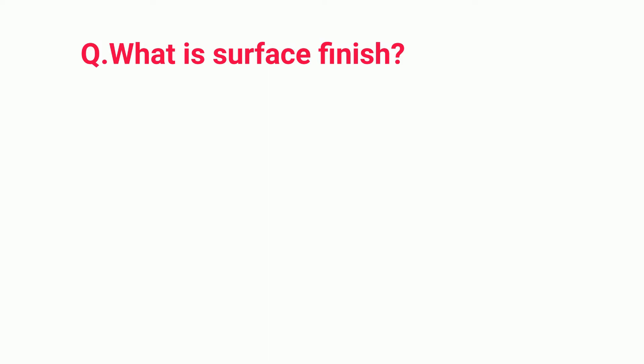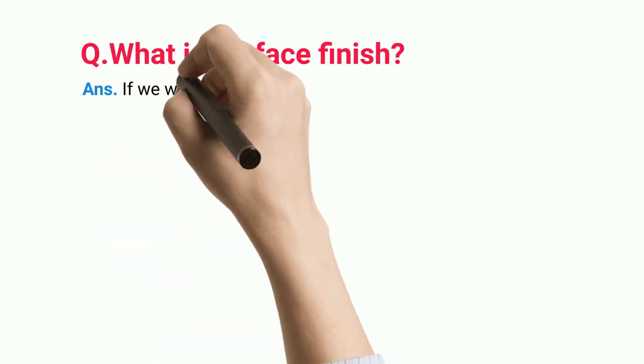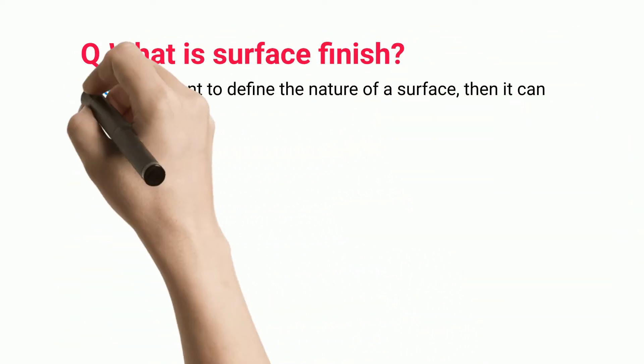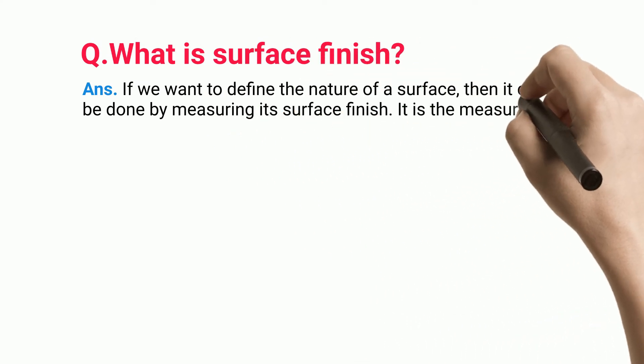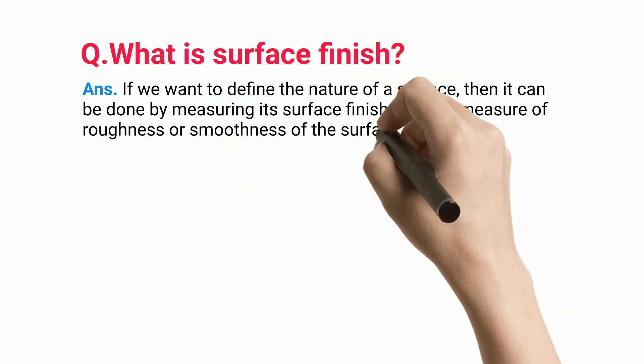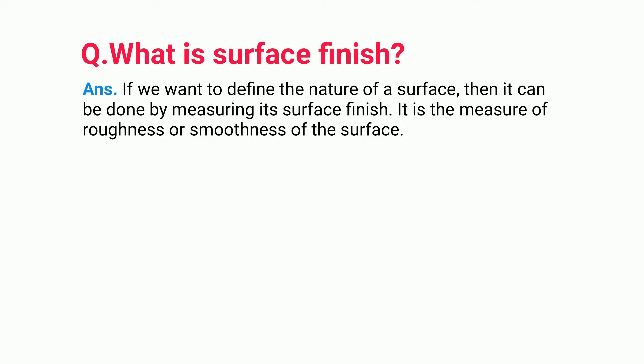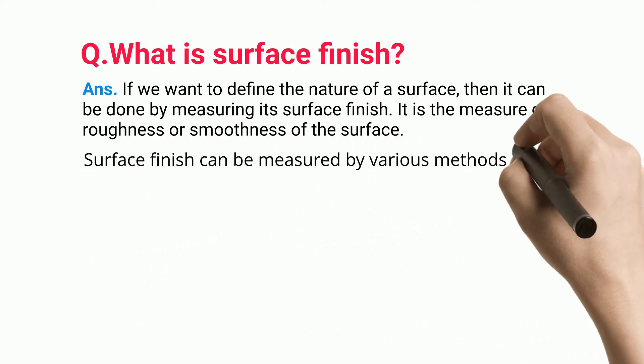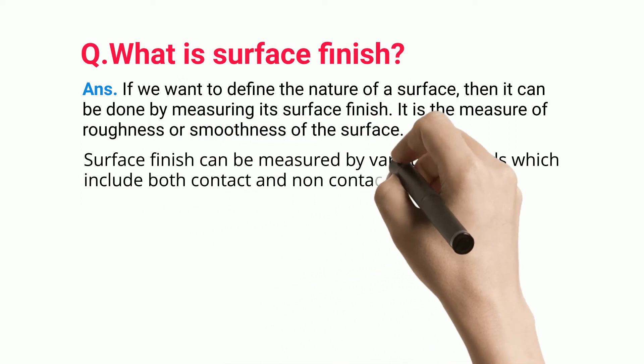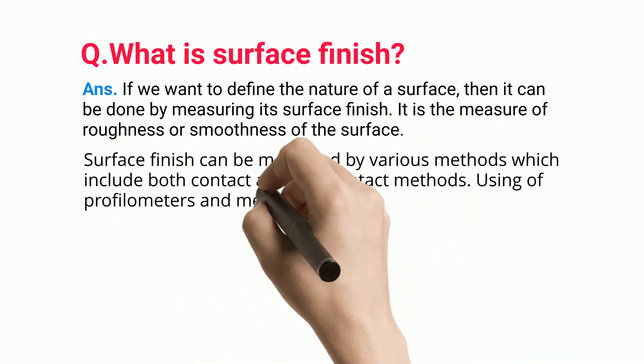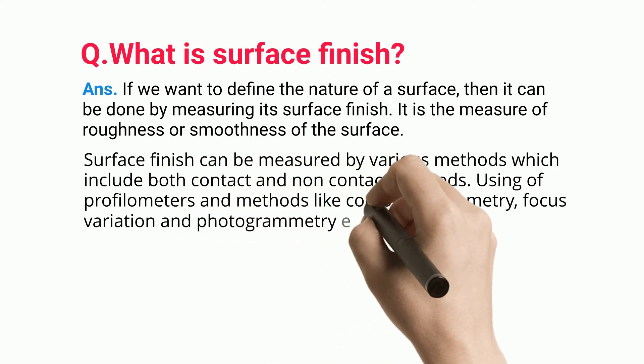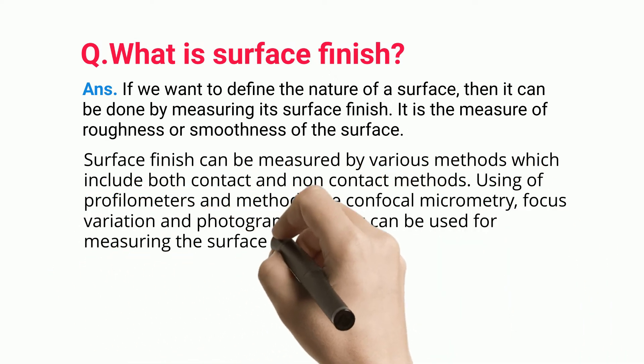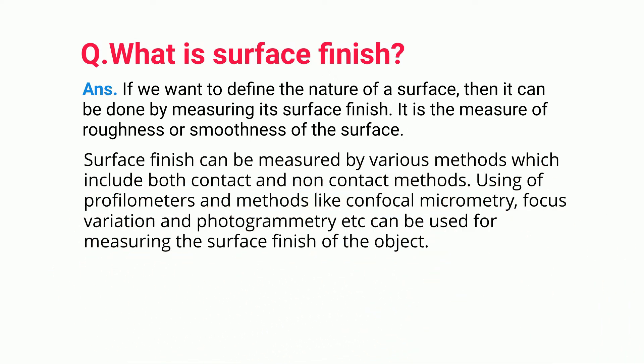What is surface finish? If we want to define the nature of a surface, it can be done by measuring its surface finish. It is the measure of roughness or smoothness of the surface. Surface finish can be measured by various methods, which include both contact and non-contact methods using profilometers and methods like confocal micrometry, focus variation, and photogrammetry.